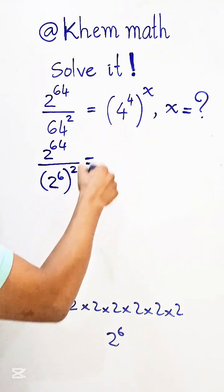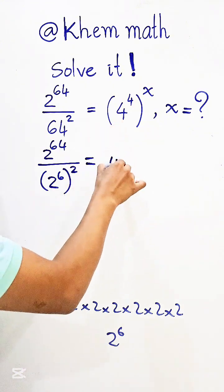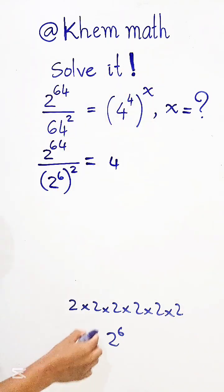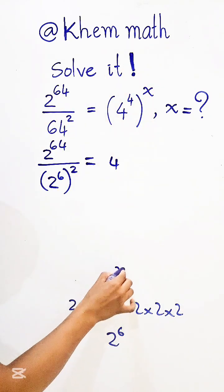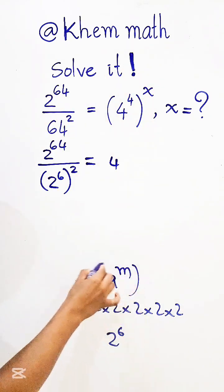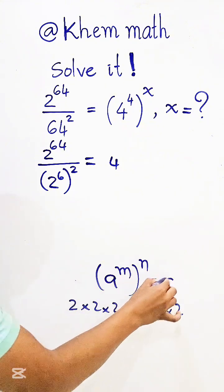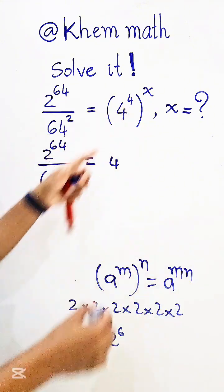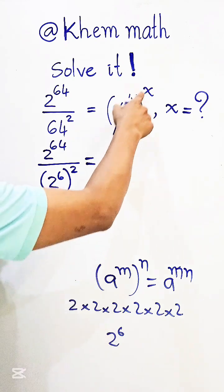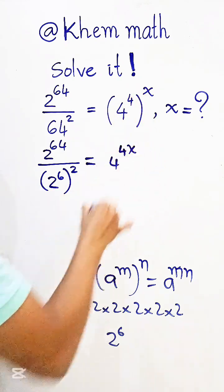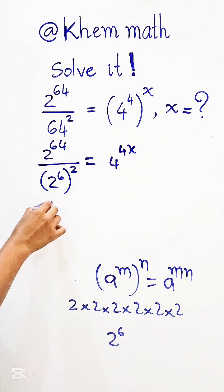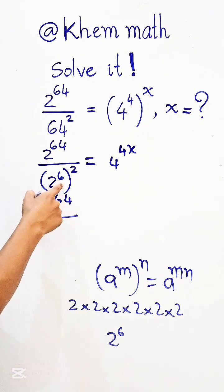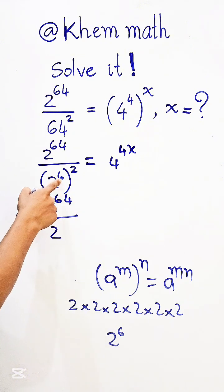On the right side, 4 to the power 4 and power 8. We use the formula: a to the power m, all to the power n, equals a to the power m times n. So this equals 4 times 8. Now the left side is 2 to the power 64, divided by 2 to the power 6 times 2, giving us 2 to the power 12.